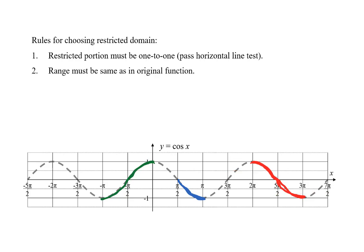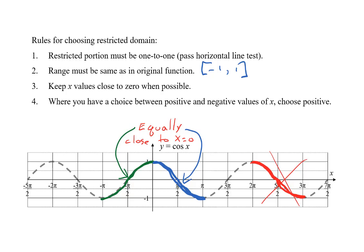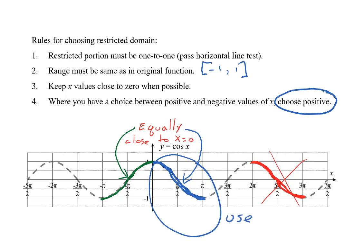We make the red one-to-one by shortening it so that each horizontal line crosses it only once. The second rule requires the same range as the original cosine curve. The cosine curve goes from a y of negative one to a y of positive one, so we need each restricted section to do that. The blue one is too short, so we extend it to go all the way between y of negative one and y of positive one without becoming non-one-to-one. The third rule says keep x values near zero — the green and blue are equally close. The fourth rule says choose positive over negative, so we use the blue part. The restricted domain for cosine runs from x equals zero to x equals pi.